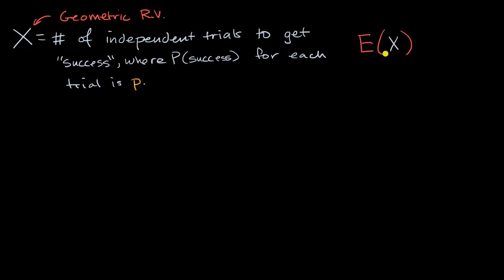I'll tell you the answer, and in future videos we will apply this formula. But in this video, we're actually going to prove it to ourselves mathematically. The expected value of a geometric random variable is going to be one over the probability of success on any given trial. So now let's prove it to ourselves.